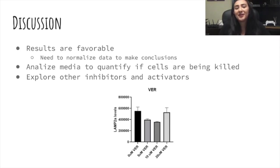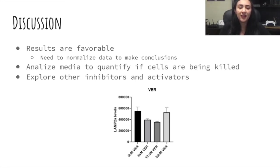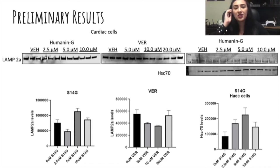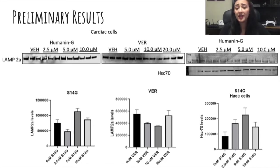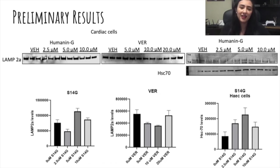So our results are favorable and look very promising. Our inhibitor seems to be lowering the levels of the proteins, and our activators seem to be upregulating the levels of our proteins. However, we need to normalize our data to actually make any conclusions. As you can see, there are some curvatures in our image — that just means there was some error within the loading, so I might have made a mistake when loading the gels. This tells us that when we normalize the data, this might show that we actually didn't get any data, which will be unfortunate, but it's okay — just science.